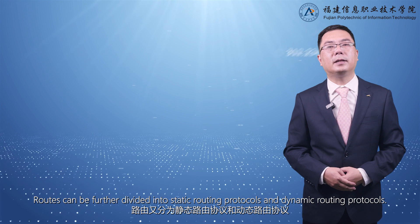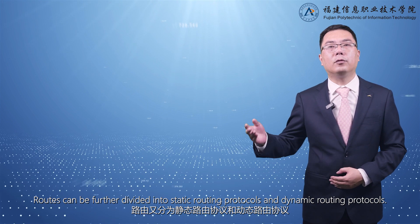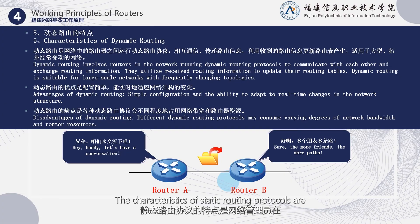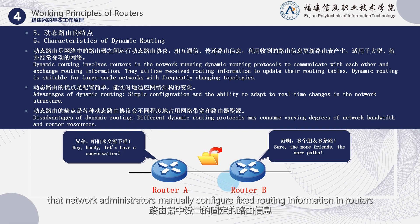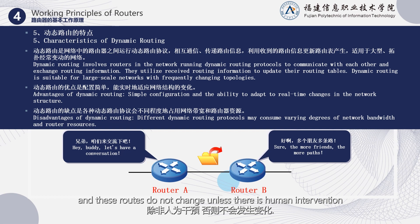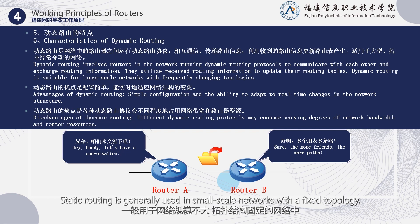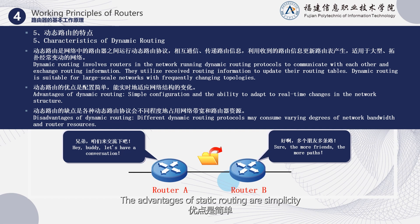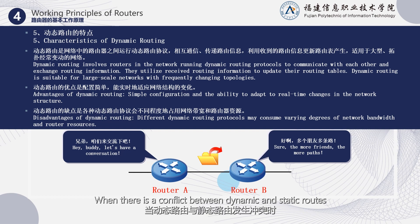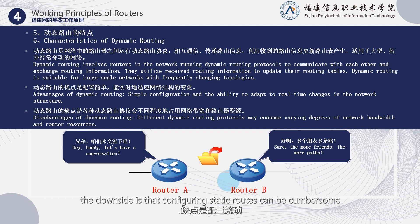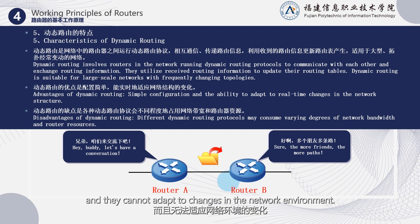Routes can be further divided into static routing protocols and dynamic routing protocols. Static routing protocols mean that network administrators manually configure fixed routing information in routers, and these routes do not change unless there is human intervention. Static routing is generally used in small-scale networks with a fixed topology. The advantages of static routing are simplicity, efficiency, and reliability, and it has the highest priority — when there is a conflict between dynamic and static routes, static routes take precedence. However, the downside is that configuring static routes can be cumbersome, and they cannot adapt to changes in the network environment.